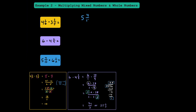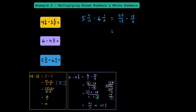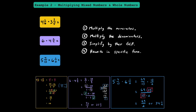Let's try one more — feel free to pause the video to try it on your own. We have 5 and 4 thirteenths multiplied by 6 and 1 half. Converting: 5 and 4 thirteenths becomes 69 thirteenths, and 6 and 1 half becomes 13 halves. Rewriting as one fraction, we have 69 times 13 over 13 times 2. We notice the top and bottom have a common factor of 13, so dividing both by 13 leaves us with 69 over 2. Using long division, 69 halves equals 34 and 1 half. The key added step for mixed numbers is converting everything to improper fractions first.